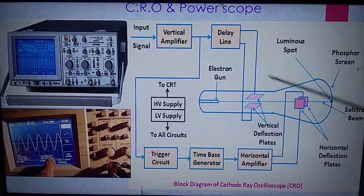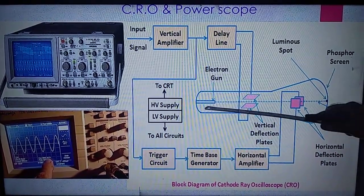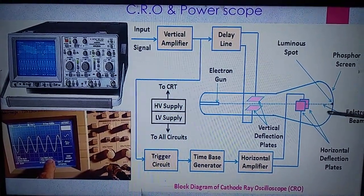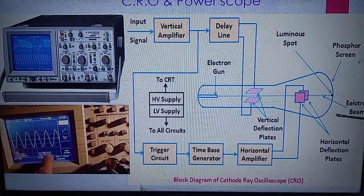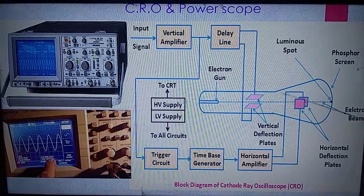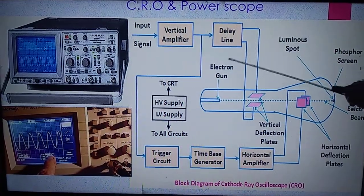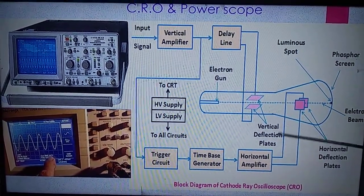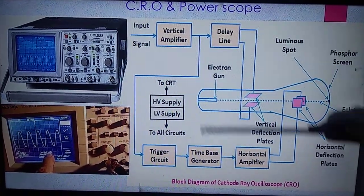If no input is applied, the electron gun generates a beam of electrons which follows a straight path and bombards on the fluorescent screen. So without any signal we get a simple spot on the CRO screen. But whenever we apply a signal, the electron beam fluctuates up and down depending upon the applied signal and the gain of the amplifier.